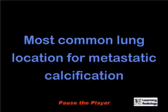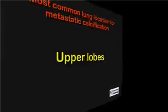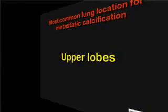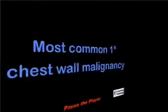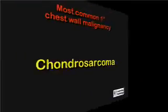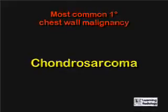What is the most common lung location for metastatic calcification in renal disease? The upper lobes. What is the most common primary chest wall malignancy? A chondrosarcoma.